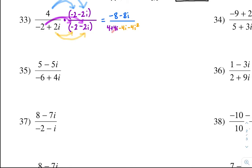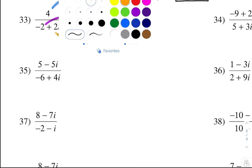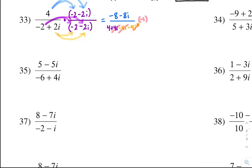Now we can cancel — the 4i and the negative 4i cancel. Recall that i squared is really negative 1. As a result, we have negative 8 minus 8i on top. On the bottom we have 4, and negative 4 times negative 1 — because i squared is negative 1 — gives us positive 4. So we're going to get negative 8 minus 8i all over 8.